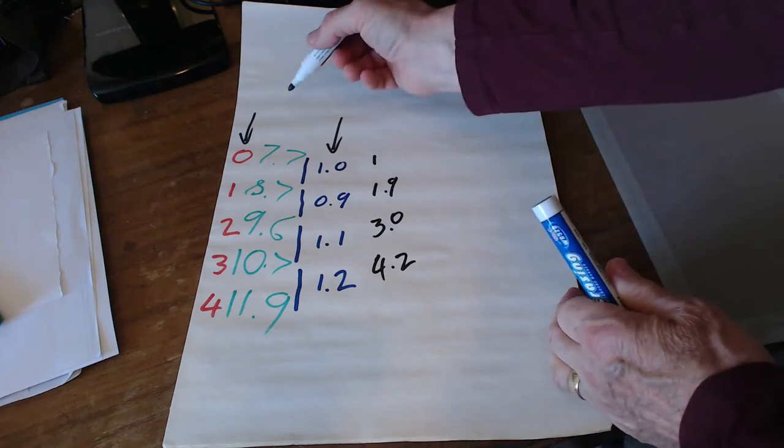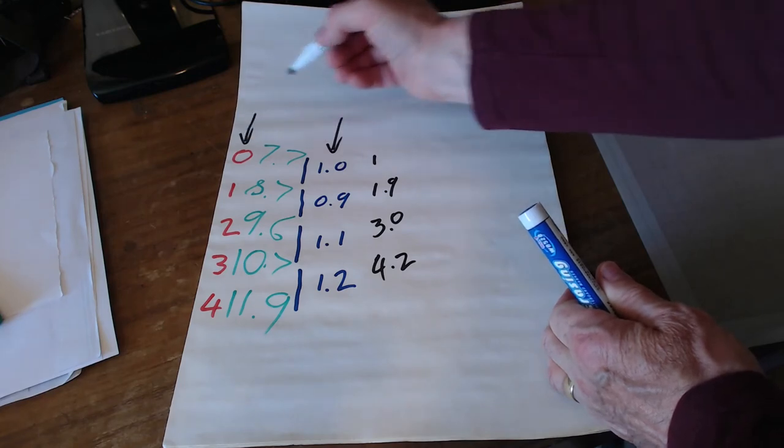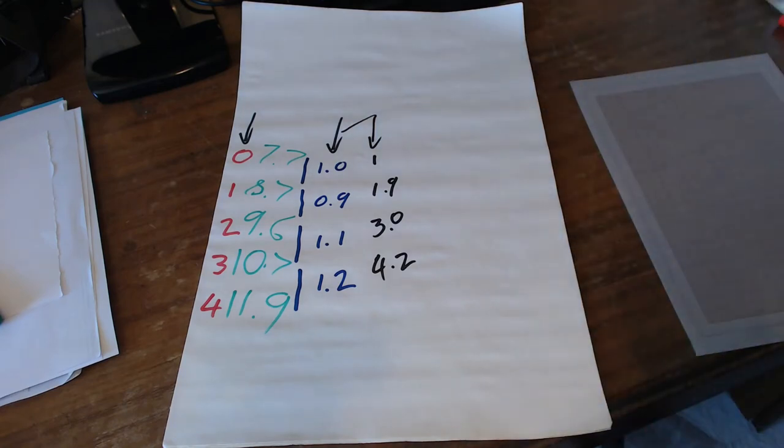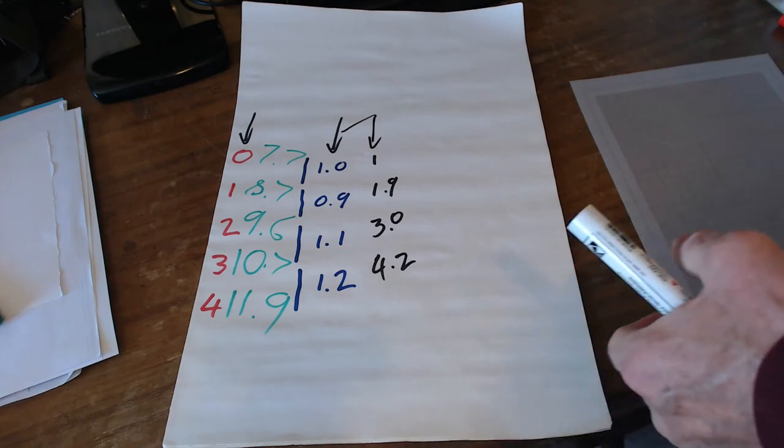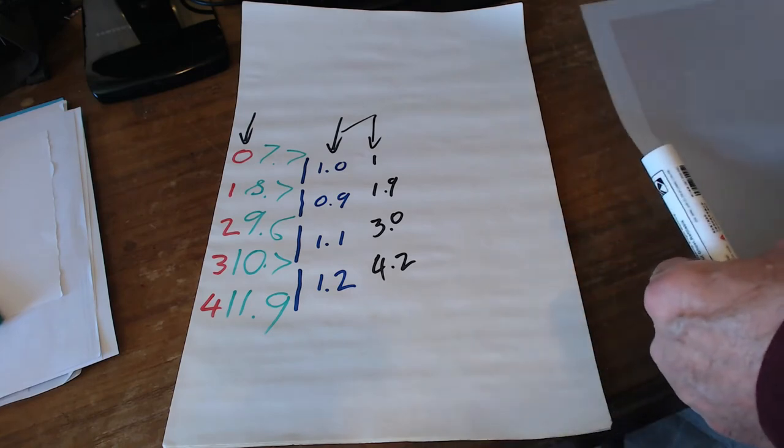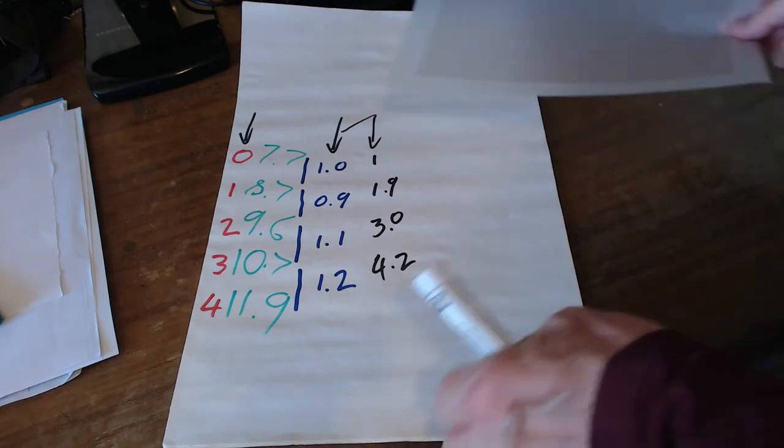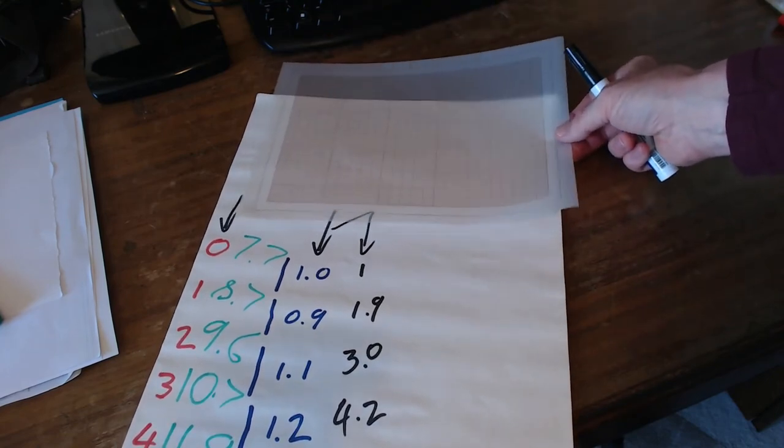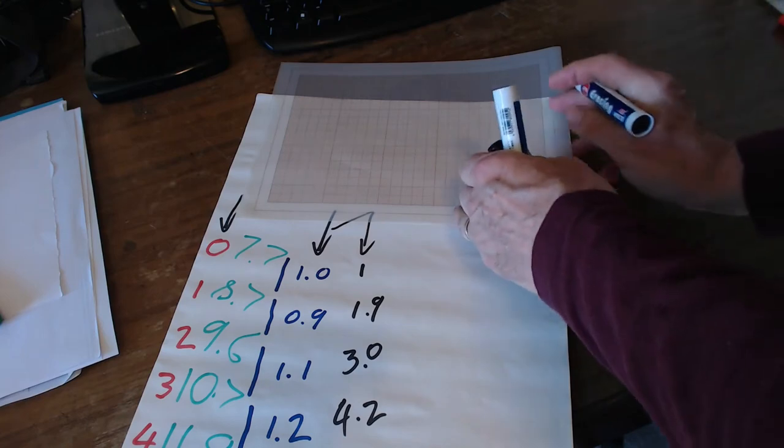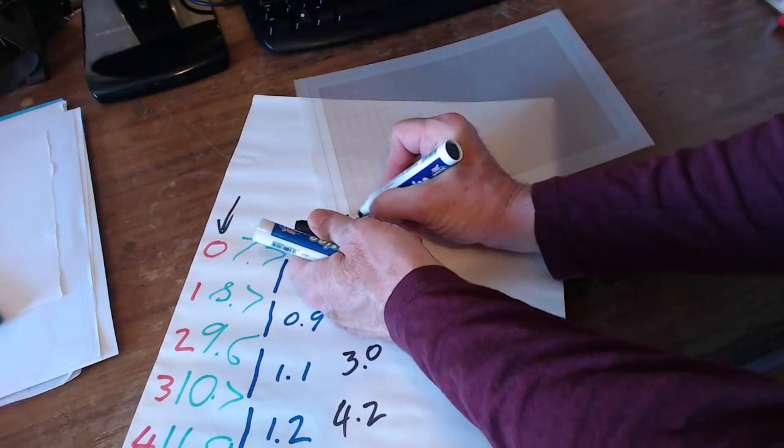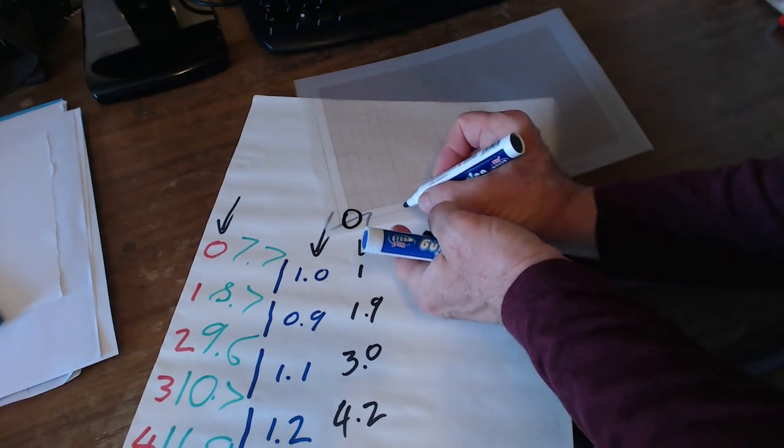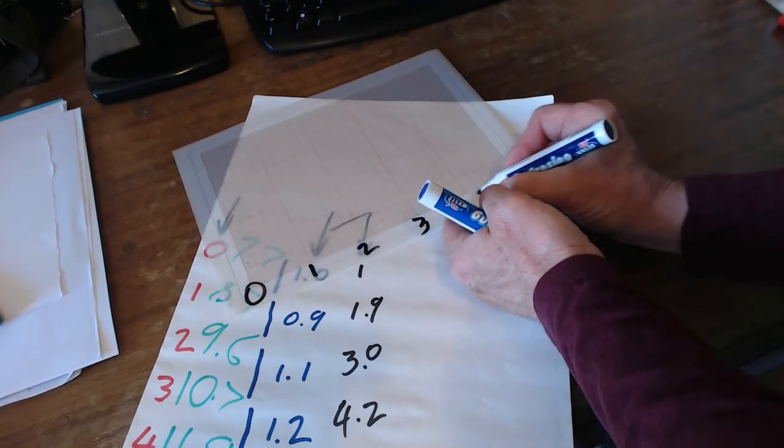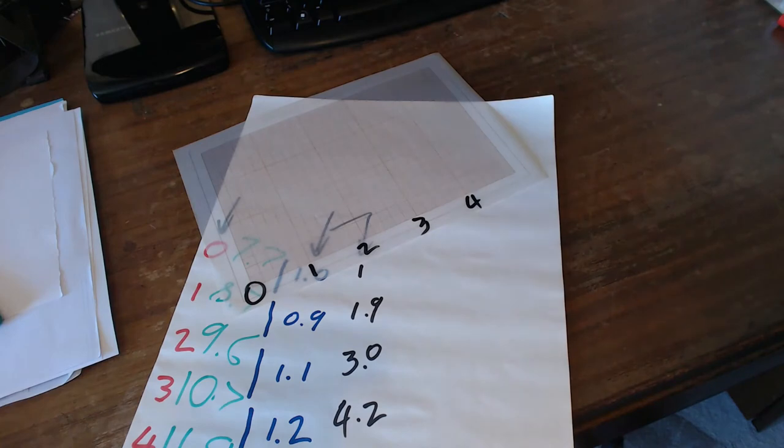I'm going to do a graph now between the weight added and the cumulative extension that I've just worked out. That graph is going to tell us what we need to know about the system. Let's start by putting some axes on. We're going to start where we had nothing added, and then we'll add one ounce, two, three, and four. That's our weight added.